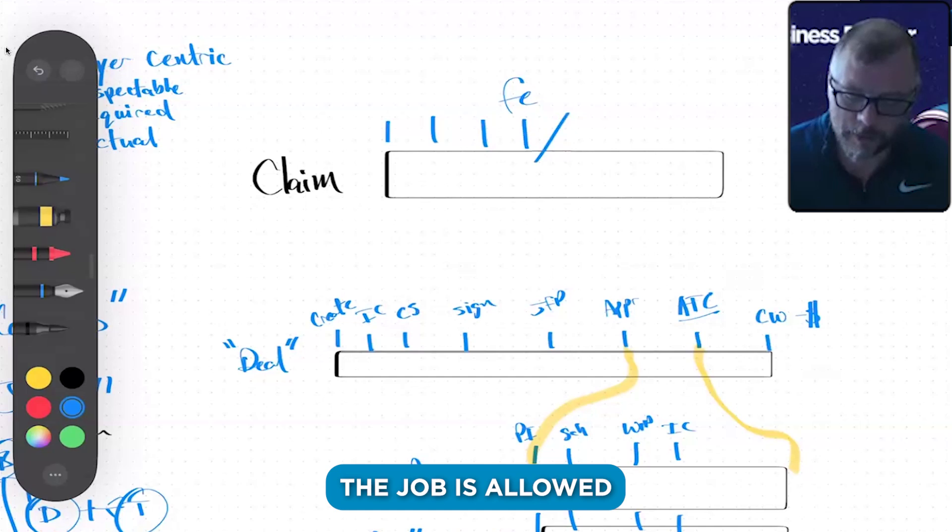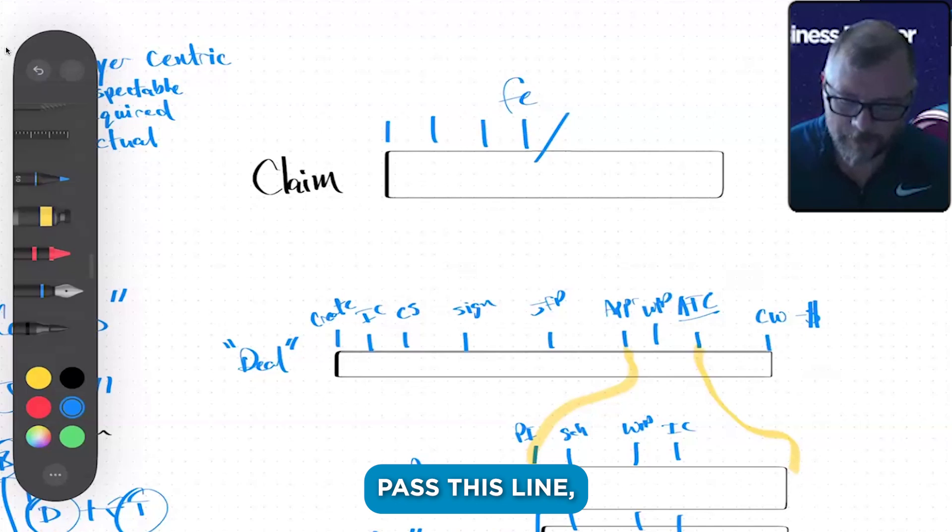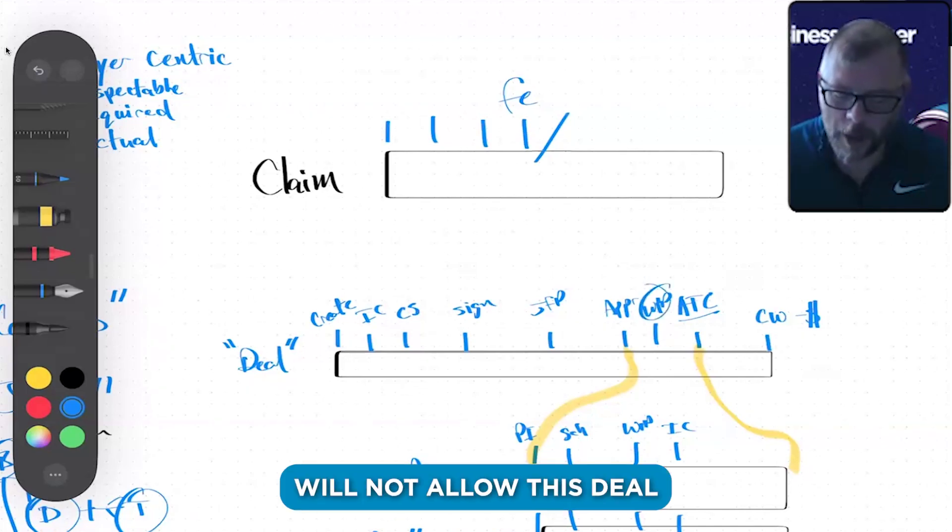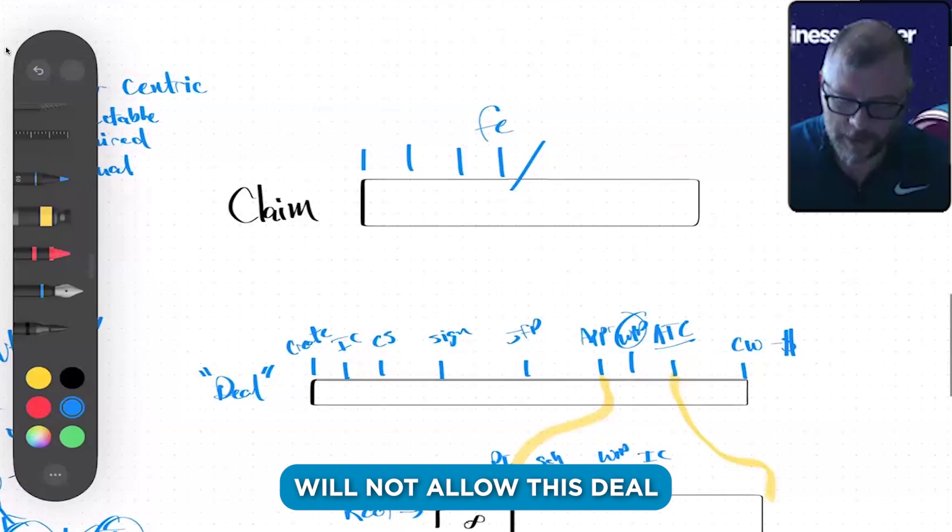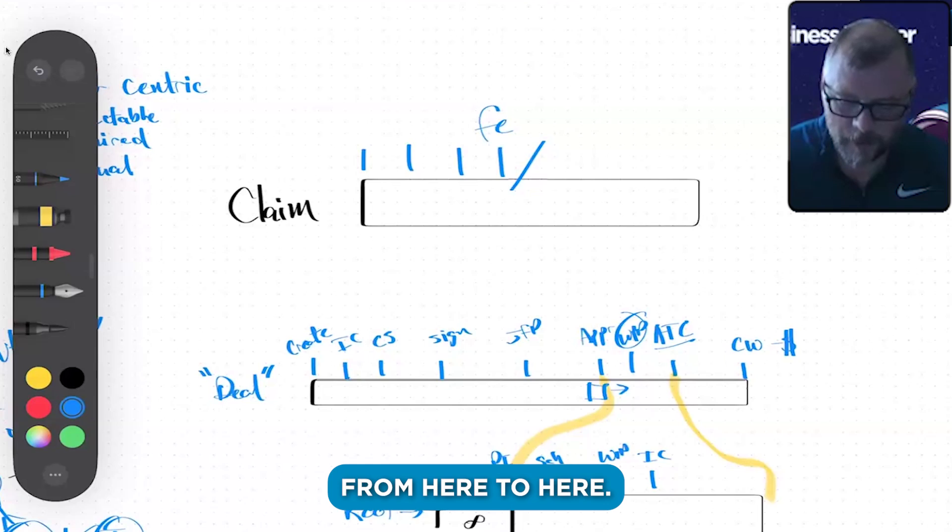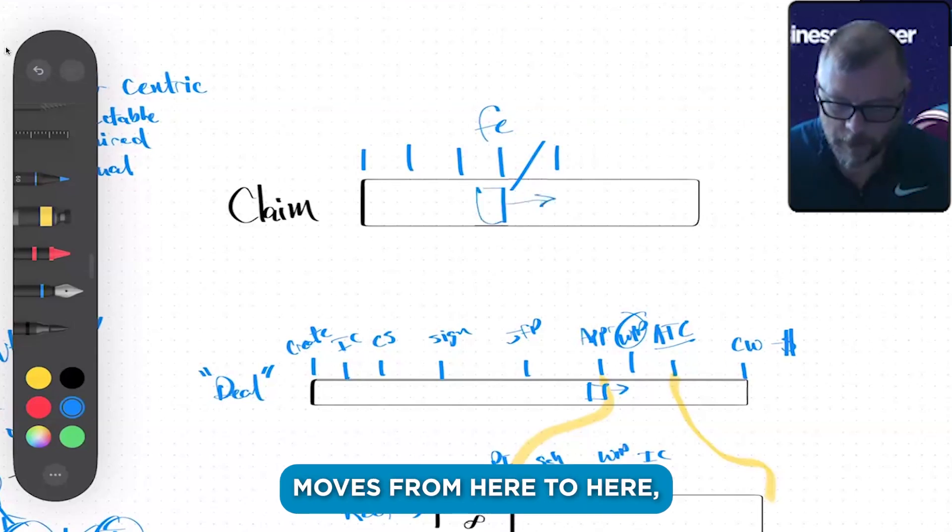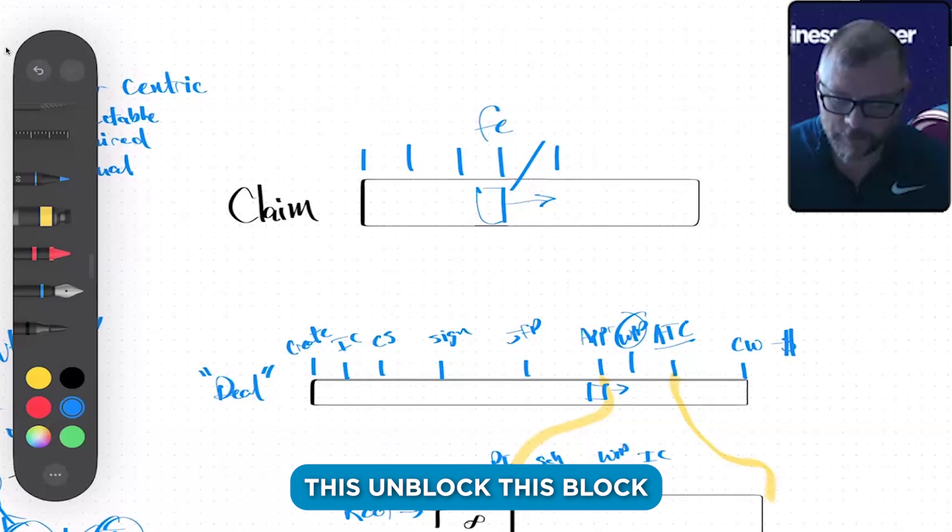Once you pass this line, the job is allowed to go into work in progress, which is a middle stage (WIP). So once you pass this line, they say basically the deal pipeline will not allow this deal to move from here to here unless this is moved from here to here. So when this claim moves from here to here, this unblocks this block from going that way.